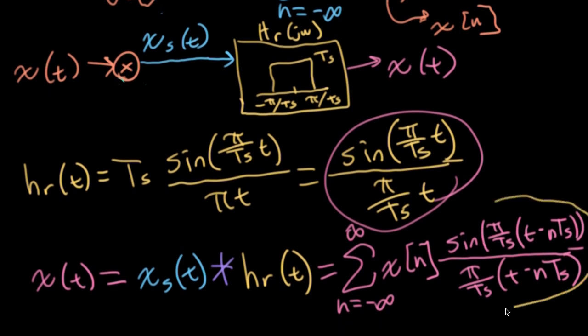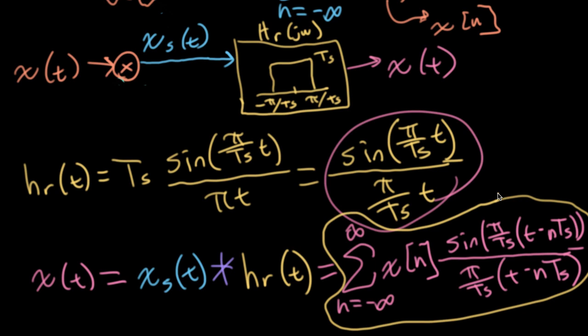This is called the Nyquist-Shannon reconstruction formula, and it's the recipe for reconstructing a band-limited signal from its samples. The way this winds up working is that each sinc function you're placing down has its zeros at the sample points of all the other samples.